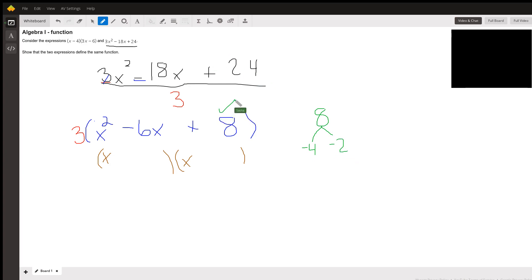And then negative 4 plus negative 2 is going to give me my negative 6, which is the next coefficient here in the middle. So now that we have those factors, we're just going to break them up into two parentheses. And I'm not going to forget about this particular GCF that we have out front.